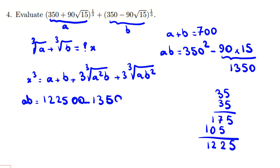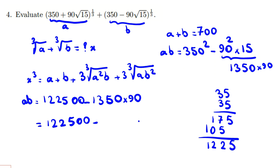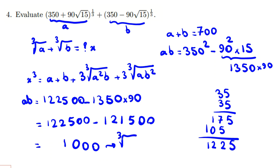We also need to multiply by 90 squared times 15. After subtracting, the result gives us a times b equals 1000. Therefore, the cube root of a times b is 10.